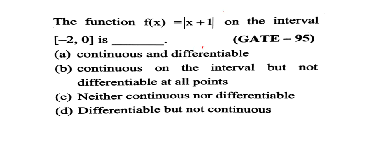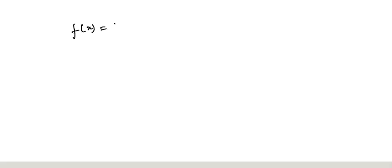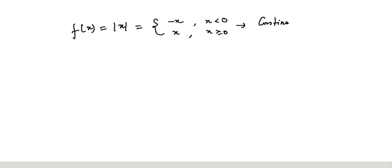First, you must know that for the modulus function |x|: if x < 0, you take -x; if x ≥ 0, you take positive x. In this problem, the function f(x) is continuous but not differentiable at x = 0.